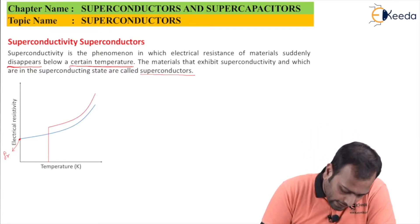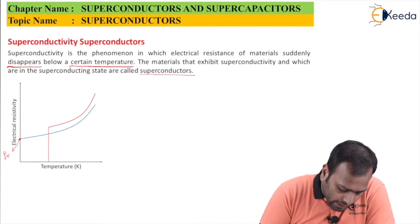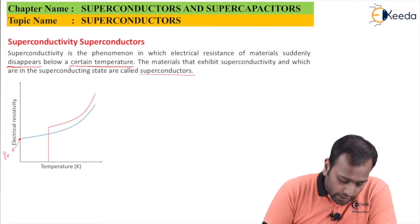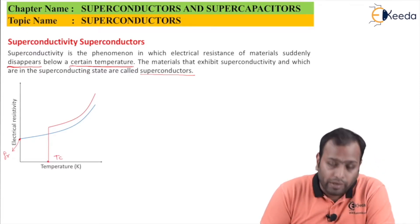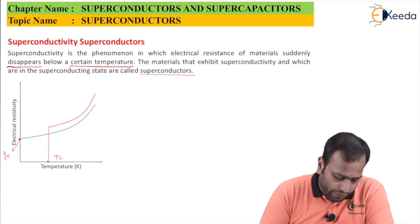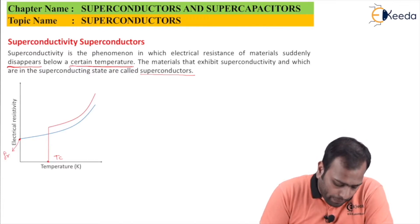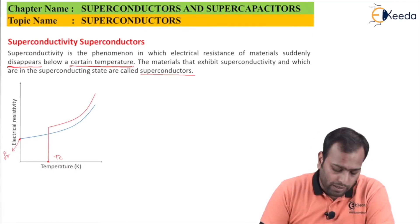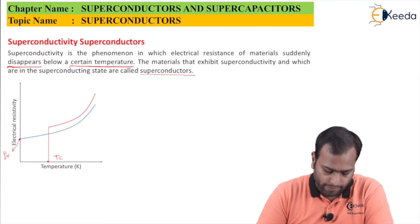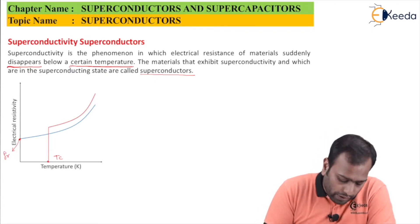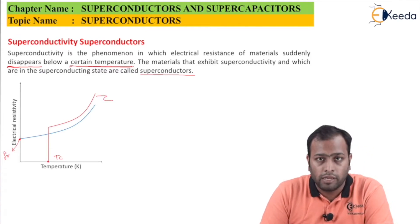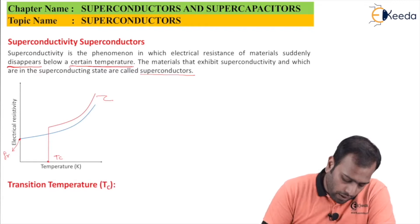For a superconductor, the graph shows a steep behavior up to the temperature Tc. At that point Tc, the resistivity falls abruptly down to zero — a behavior that normal metals do not exhibit. Metals which show this relationship are termed superconductors.